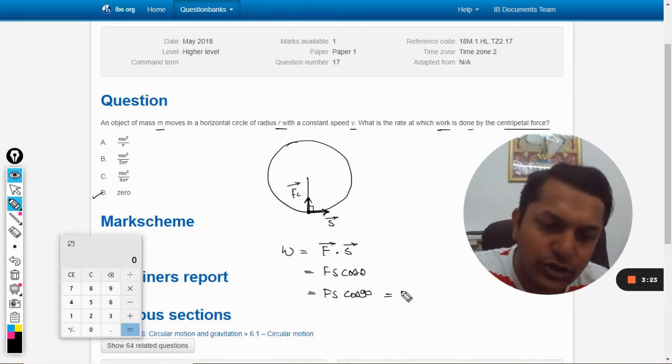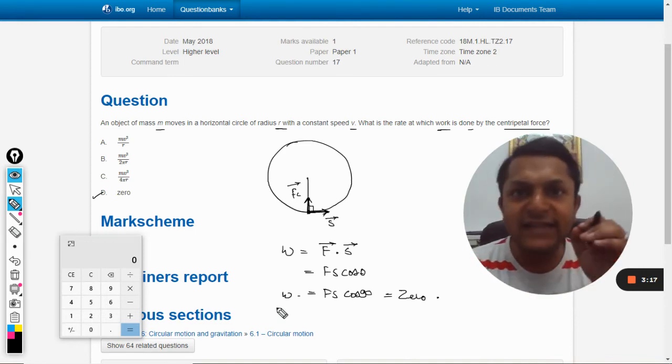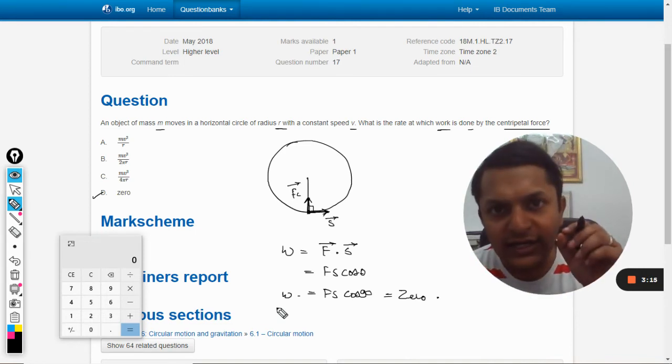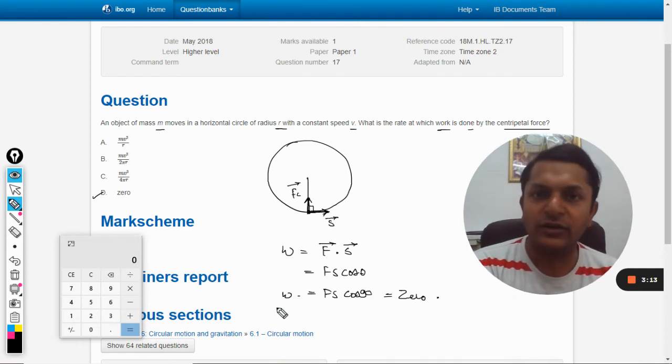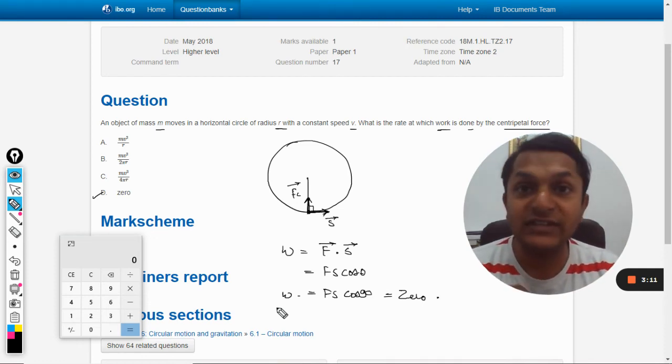So that is why the work will become zero. Work done by centripetal force on a body which is moving in circular motion is always zero. So there is no question of rate of doing work when even the work is zero, so the rate of doing work will also be zero.